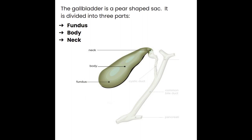The fundus hangs a little more inferiorly into the body — it's rounded and we can see it hanging just below the inferior margin of the liver. The body is the central portion and the neck is the most superior part, continuous with the cystic duct. The gallbladder is a floppy organ, so it is standard protocol to roll the patient onto their side to evaluate positional changes. When we roll the patient, the fundus moves into more of a medial position.